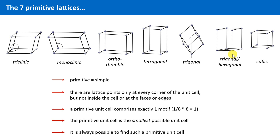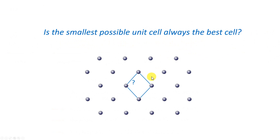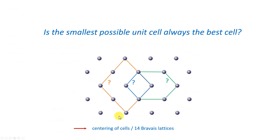In this unit, we want to answer the question of whether the smallest unit cell is always the best choice, or in which cases it might be better to choose a larger unit cell. This will lead us to the so-called centerings and thereby to the 14 Bravais lattices. So, let's start.